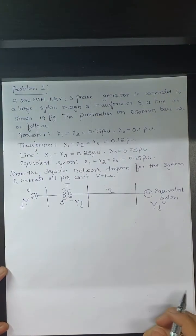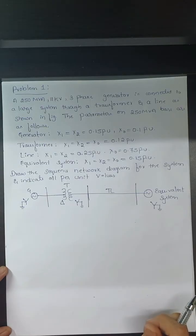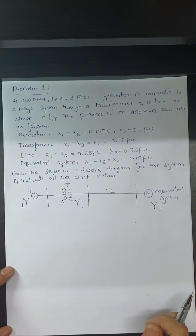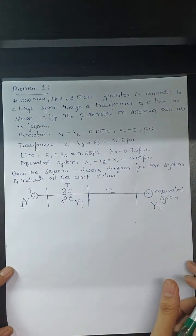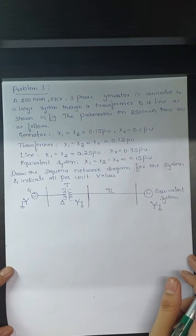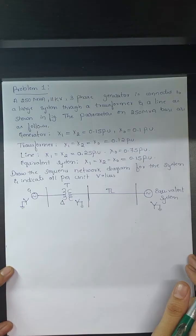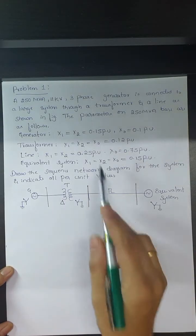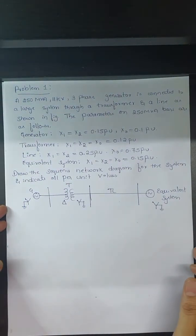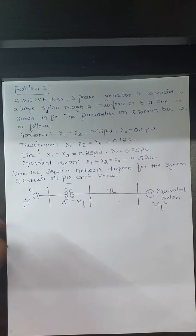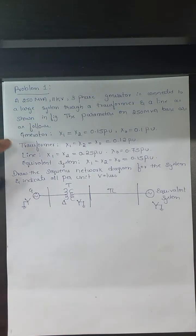Hello everyone. In this session I am doing one problem on sequence impedance and sequence network. The problem is: a 250 MVA, 11 kilovolt three-phase generator is connected to a large system through a transmission line as shown in the figure. The parameters on a 250 MVA base are as follows for the generator, transformer, line, and equivalent system.